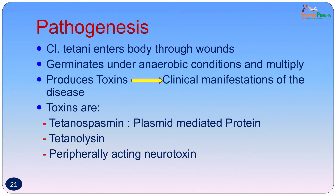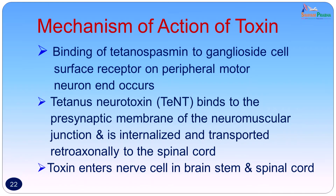Tetanospasmin is the main toxin responsible for the signs and symptoms of tetanus. This neurotoxin is plasmid-mediated — only in the presence of the plasmid does the organism produce this neurotoxin. Tetanolysin does not play a role in clinical manifestations but is responsible for the beta hemolysis seen on blood agar. The peripherally acting neurotoxin could play some role in causing local tetanus. The tetanospasmin binds to the ganglioside cell surface receptor on the peripheral motor neuron, at the presynaptic membrane of the neuromuscular junction, is internalized, and is transported retrogradely to the spinal cord. The toxin enters nerve cells in the brain stem and spinal cord.